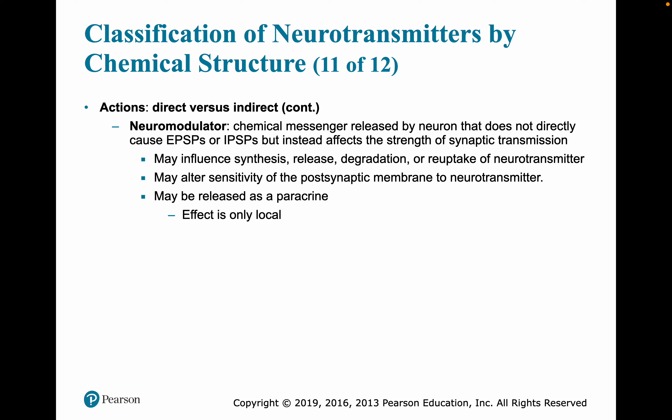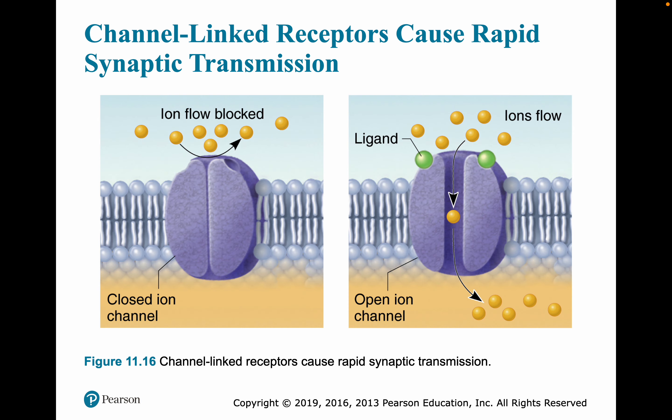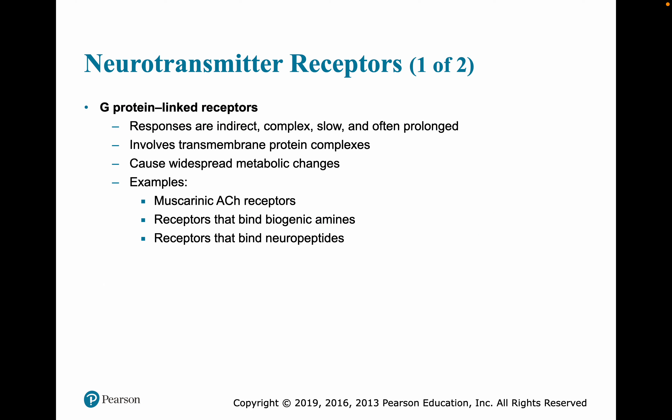Neuromodulators can alter sensitivity of the postsynaptic membrane to the neurotransmitter. Their effects may be paracrine, meaning they work just locally, similar to a hormone but only locally. Channel-linked receptors are ligand-gated ion channels; the action is immediate and brief. Excitatory receptors are channels for small cations with sodium influx, while inhibitory ones allow chloride influx. G-protein-linked receptors are indirect, more complex, and a little slower, but offer prolongation and a wider range of effects. This involves transmembrane protein complexes and widespread metabolic changes. Muscarinic acetylcholine receptors, receptors that bind biogenic amines, and receptors that bind neuropeptides are this type of receptor.